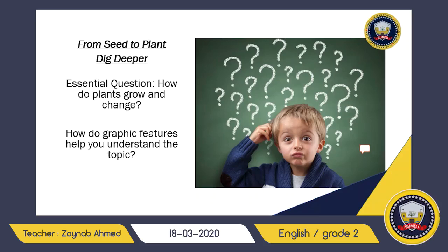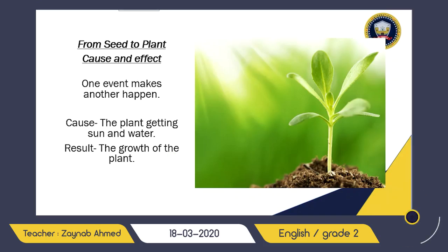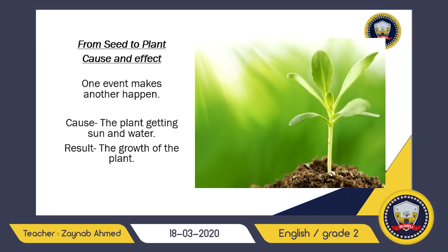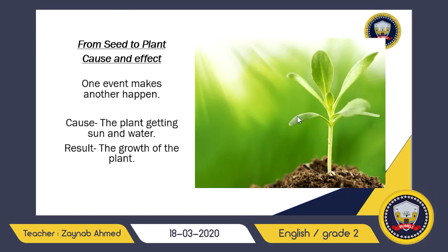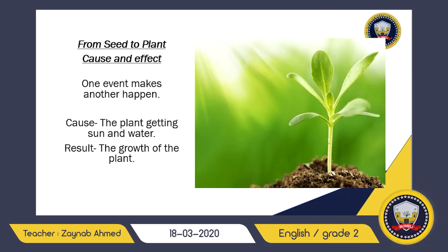Now let's move on to cause and effect. One event makes another happen. For example, if you eat unhealthy food, you'll fall sick — so eating unhealthy food is the cause, and getting sick is the result. In this picture, the cause is the plant getting sun and water, and as a result, there is growth of the plant. There is always an effect after the cause.